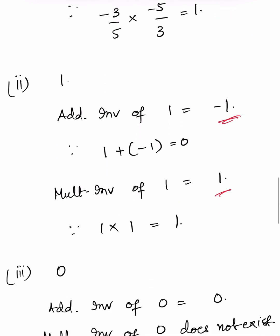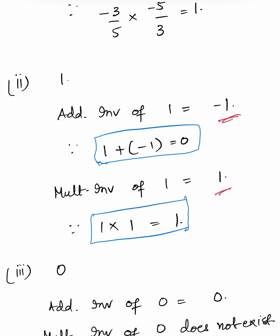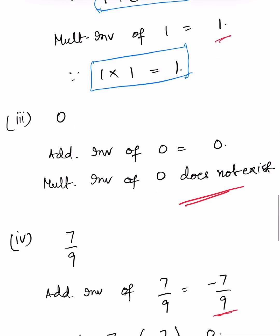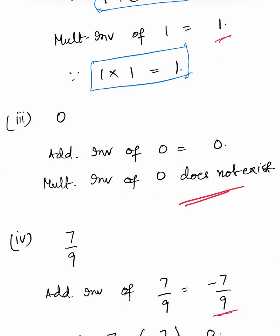Second, 1. The additive inverse of 1 is -1, because 1 + (-1) = 0. The multiplicative inverse of 1 is 1, because 1 × 1 = 1. For 0: the additive inverse of 0 is 0 itself, because 0 + 0 = 0. The multiplicative inverse of 0 does not exist, because whatever number we multiply 0 with, we always get 0, never 1.